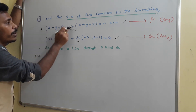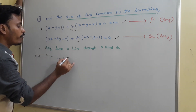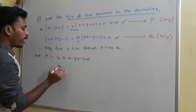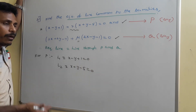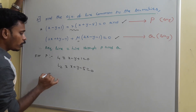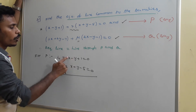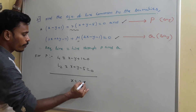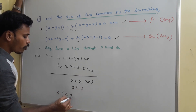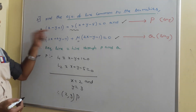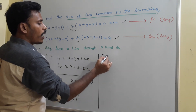For the first family, it is of the form L1 plus lambda L2 equals 0. L1 is x minus y plus 1 equals 0 and L2 is x plus y minus 5 equals 0. The point of intersection of these two is the point of concurrency P. Adding the two equations directly cancels the y term: 2x minus 4, so x equals 2 and y equals 3. Therefore P is (2, 3).